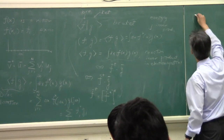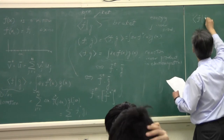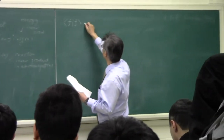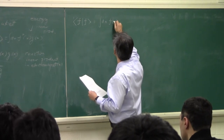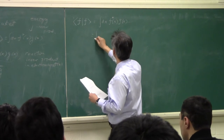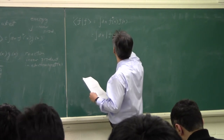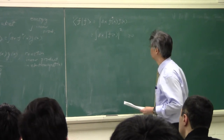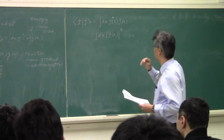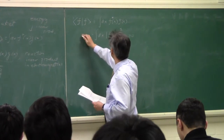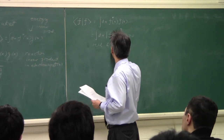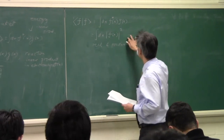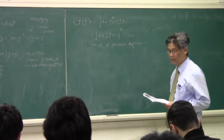The good thing about the energy inner product is that if you make the two functions the same, you get the integral of |f(x)|^2, which is always positive definite and real. If f(x) is not equal to zero everywhere, this is always positive definite and greater than zero.